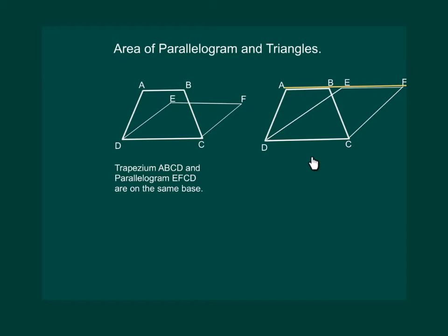Now look at the second figure. In this, trapezium ABCD and the parallelogram EFCD are on the same base DC. In addition, the vertices A, B, E and F, opposed to the base DC, lie on the line AF which is parallel to DC.